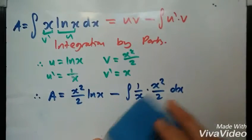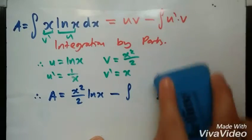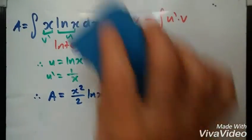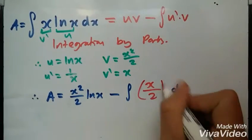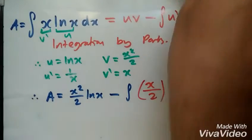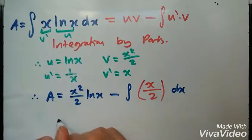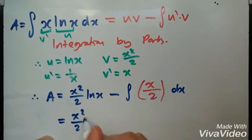Let me just write that in: x over 2 dx. And now this is easy to integrate. Hence this is, writing out again, x squared over 2 log x minus...